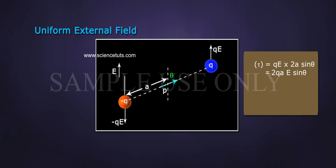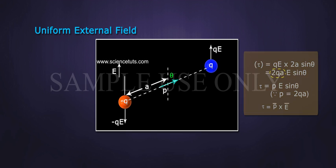The magnitude of torque Tau is equal to QE into 2A sine theta, which equals 2QAE sine theta. Tau equals PE sine theta, where P equals 2QA.